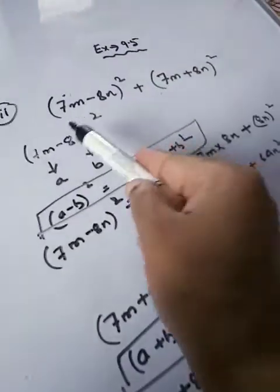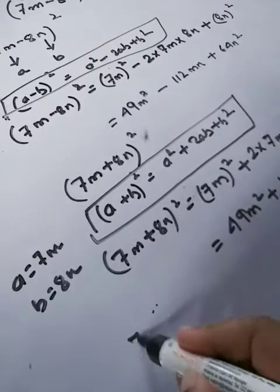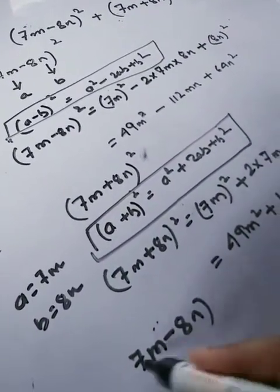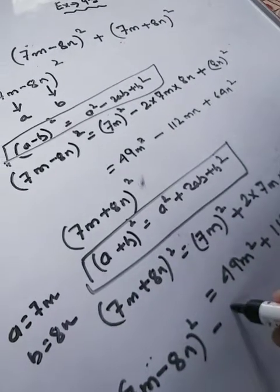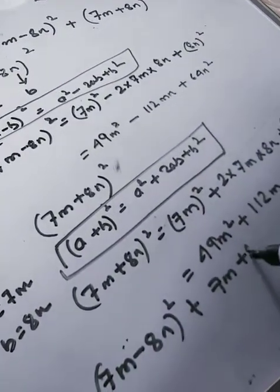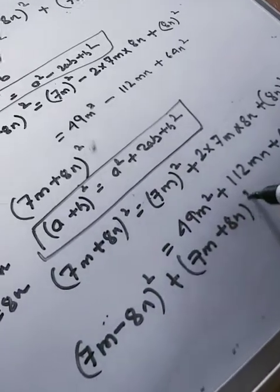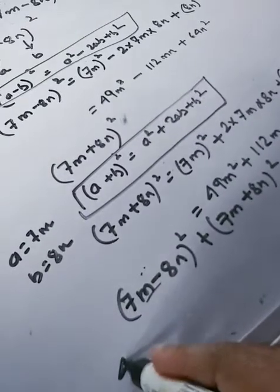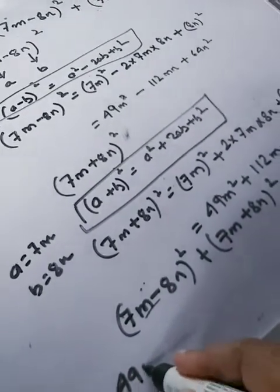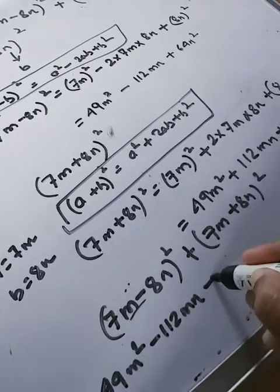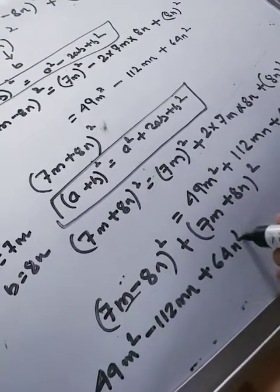Now we'll solve this sum, that is 7m minus 8n whole square and then again we have to plus 7m plus 8n whole square. In place of this we'll write 49m square minus 112mn plus 64n square, we'll put the bracket, plus this one 49m square plus 112mn plus 64n square.